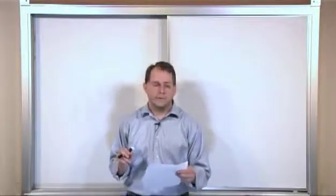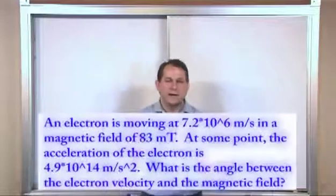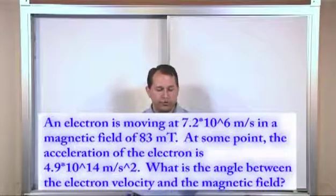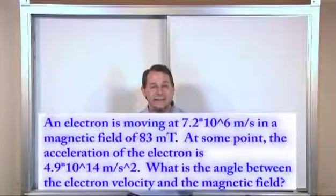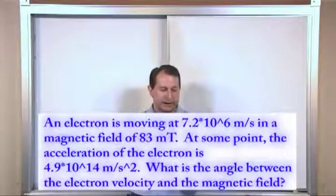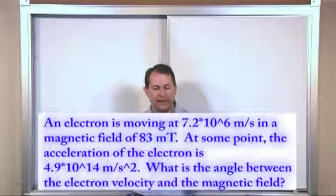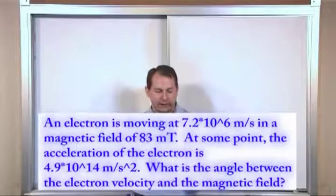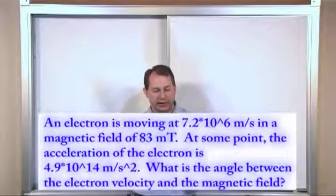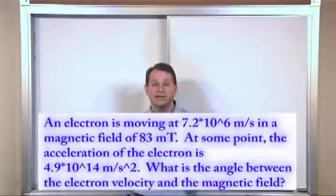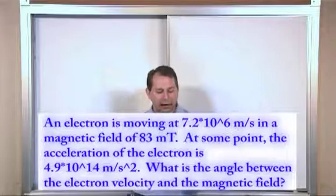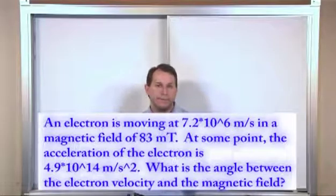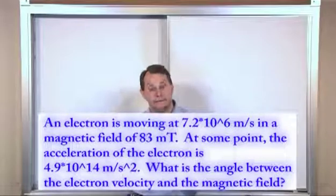And the first problem goes like this. An electron in a TV tube moves at a speed of 7.2 times 10 to the sixth meters per second in a magnetic field of 83 milliteslas. At some point the acceleration of the electron is 4.9 times 10 to the 14 meters per second squared. What is the angle between the magnetic field B and the velocity V?